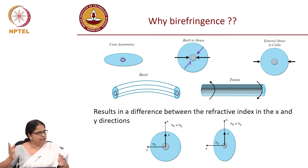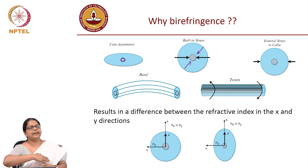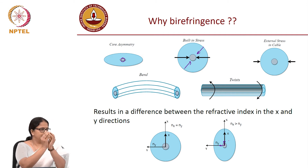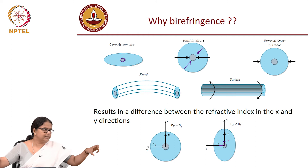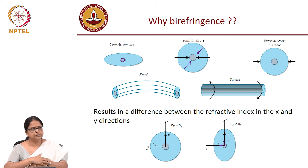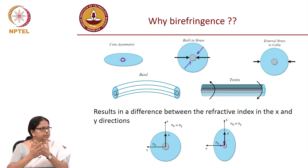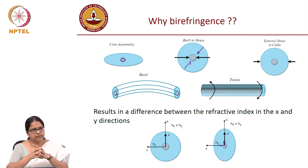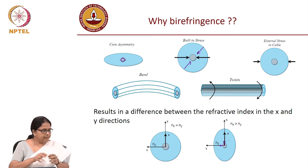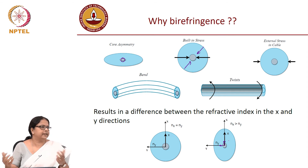We can model all this by resolving into X and Y directions and saying that the effective index NX along X and the effective index NY along Y are not the same. This does not mean the fiber is physically squished — it just means all these variations are modeled as a change in NX and NY, where X and Y are the two polarizations. This phenomenon results in something called effective birefringence.